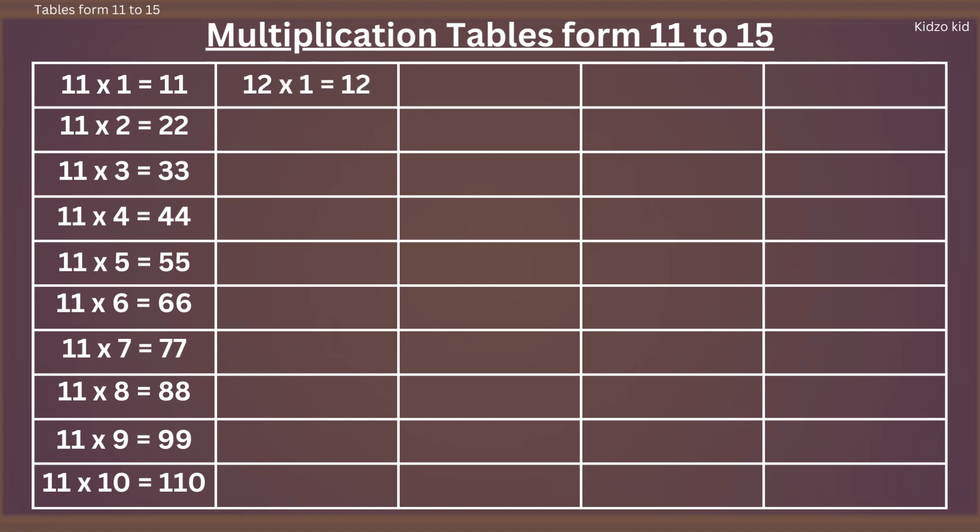12 ones are 12, 12 twos are 24, 12 threes are 36, 12 fours are 48, 12 fives are 60.